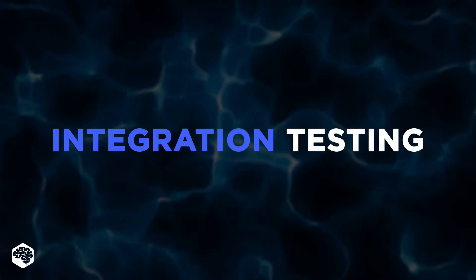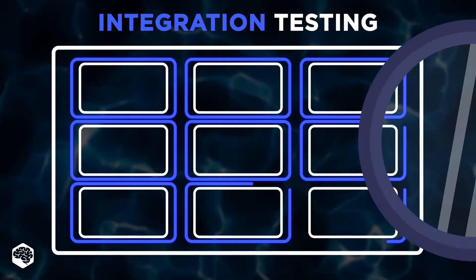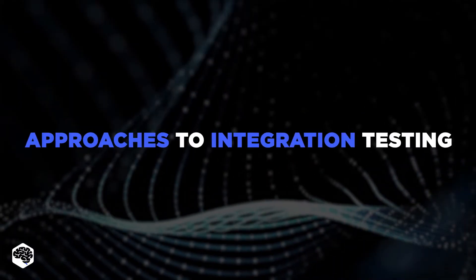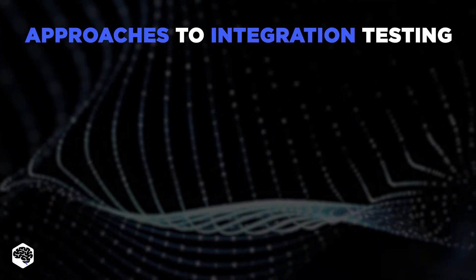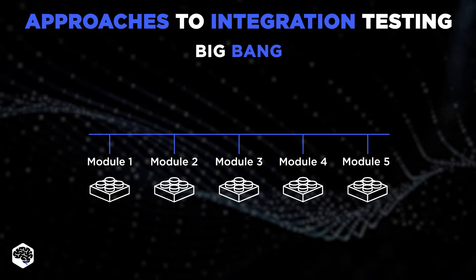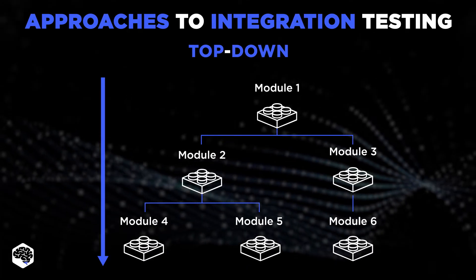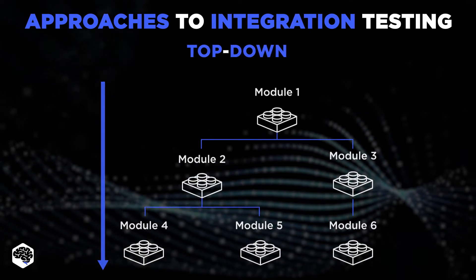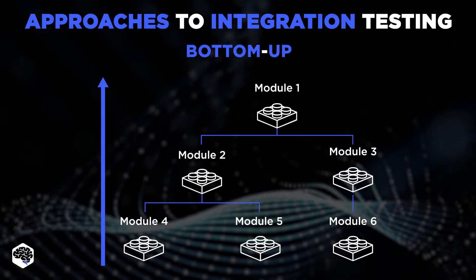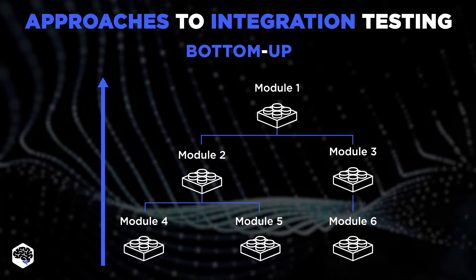Integration testing takes all the modules of software and tests them as a group to make sure they work well together. There are three different approaches: the Big Bang approach, where you simultaneously integrate and test all modules; the Top Down approach, in which integration is tested progressively from top to bottom; and the Bottom Up approach, in which modules are tested in ascending order until all levels have been combined and tested as a unit.